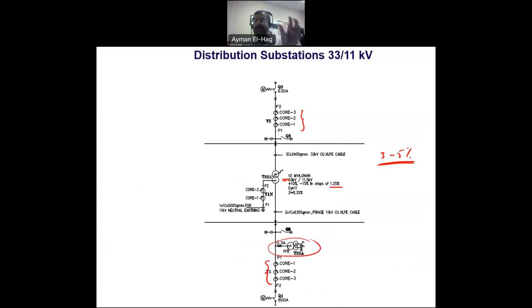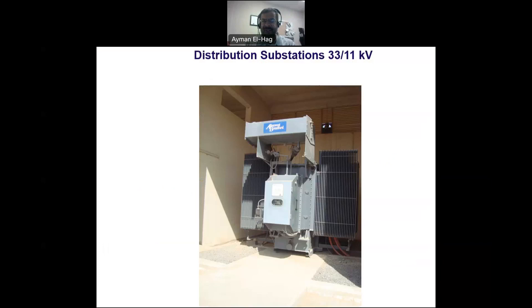Let's look at the physical structure of the transformer. This is the 10 MVA transformer. At the top we see the conservator. Whenever the transformer oil gets heated, it needs to expand, so it goes up here. When the transformer cools, the oil goes down. This gives you room for the expansion and contraction of the oil.